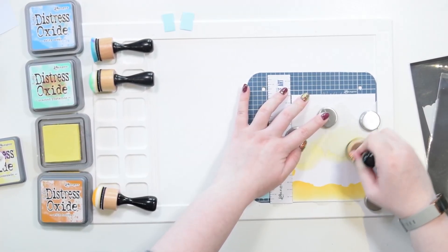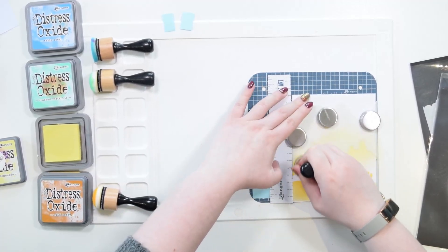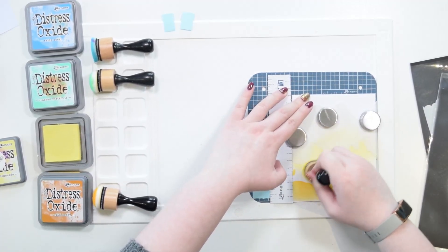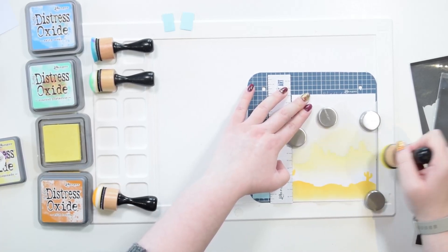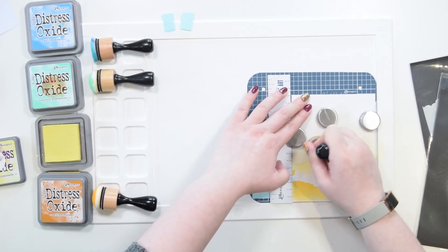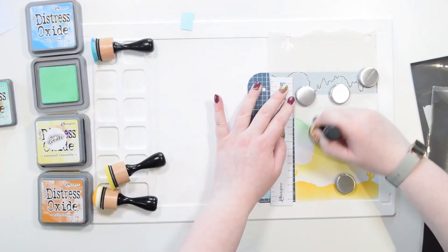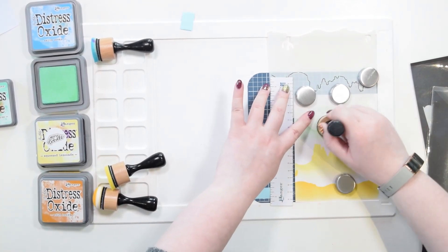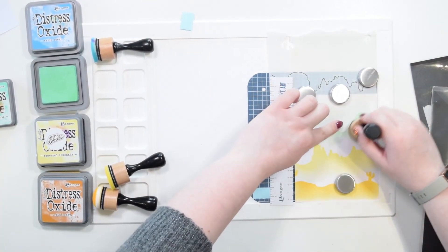The geography nerd in me cannot for the life of me remember what the shapes of these jagged mountains are called. I think it might be buttes or mesas - someone's gonna have to correct me in the comments below. And I've then used Cracked Pistachio for these more rounded mountain tops here.